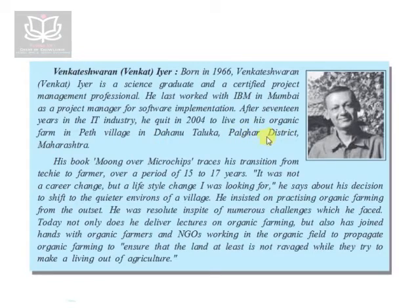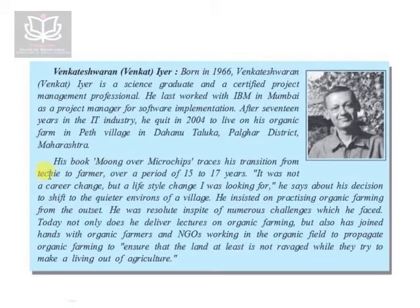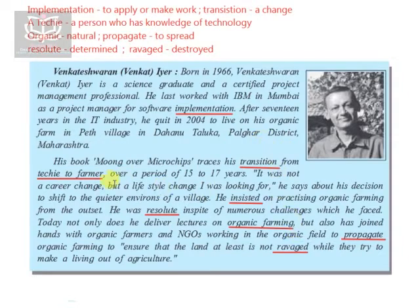His book 'Moong Over Microchips' traces his transition from techie to farmer over a period of 15 to 17 years. Initially he was a techie — a person with great knowledge about technology, modern software, and hardware, essentially a software engineer — and then he became a farmer. The name 'Moong Over Microchips' is a wonderful title. This transition, meaning a change, was not just a career change but a lifestyle change.